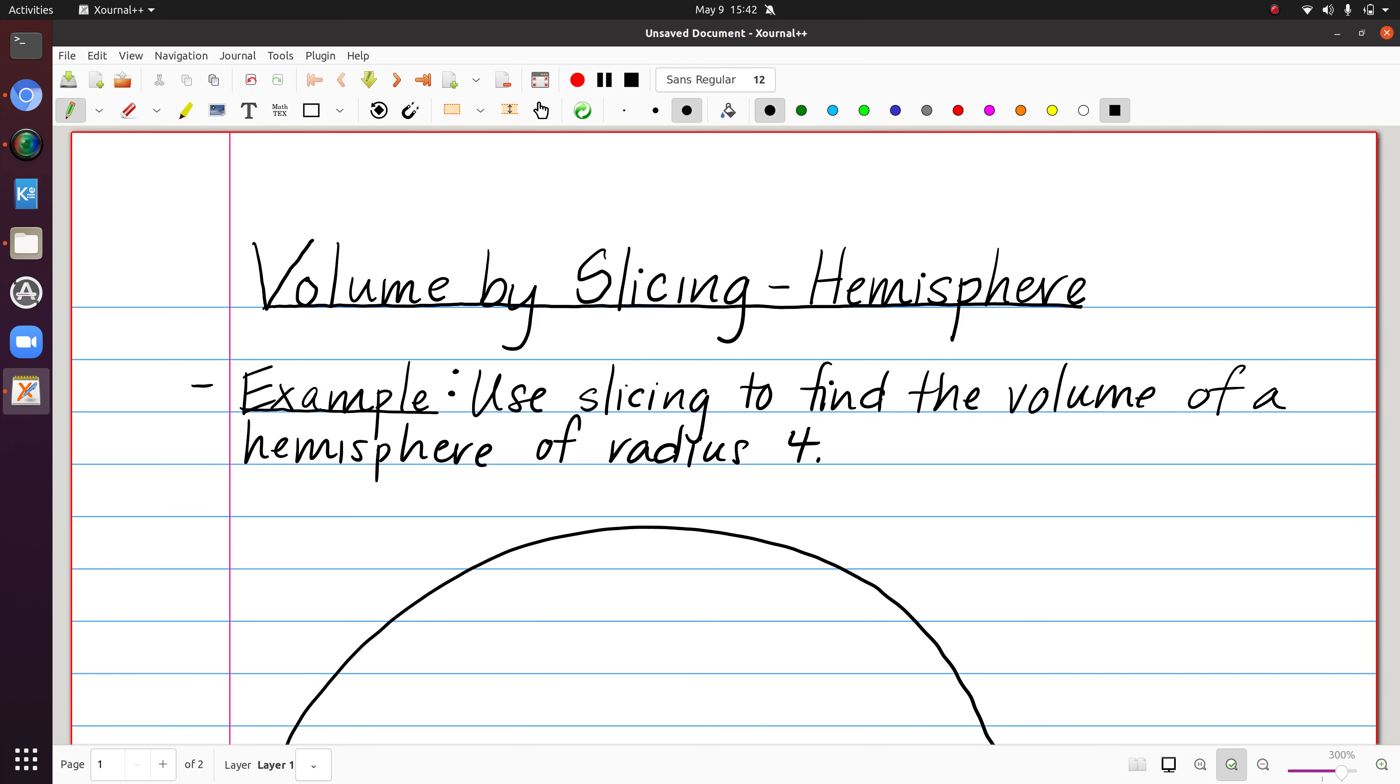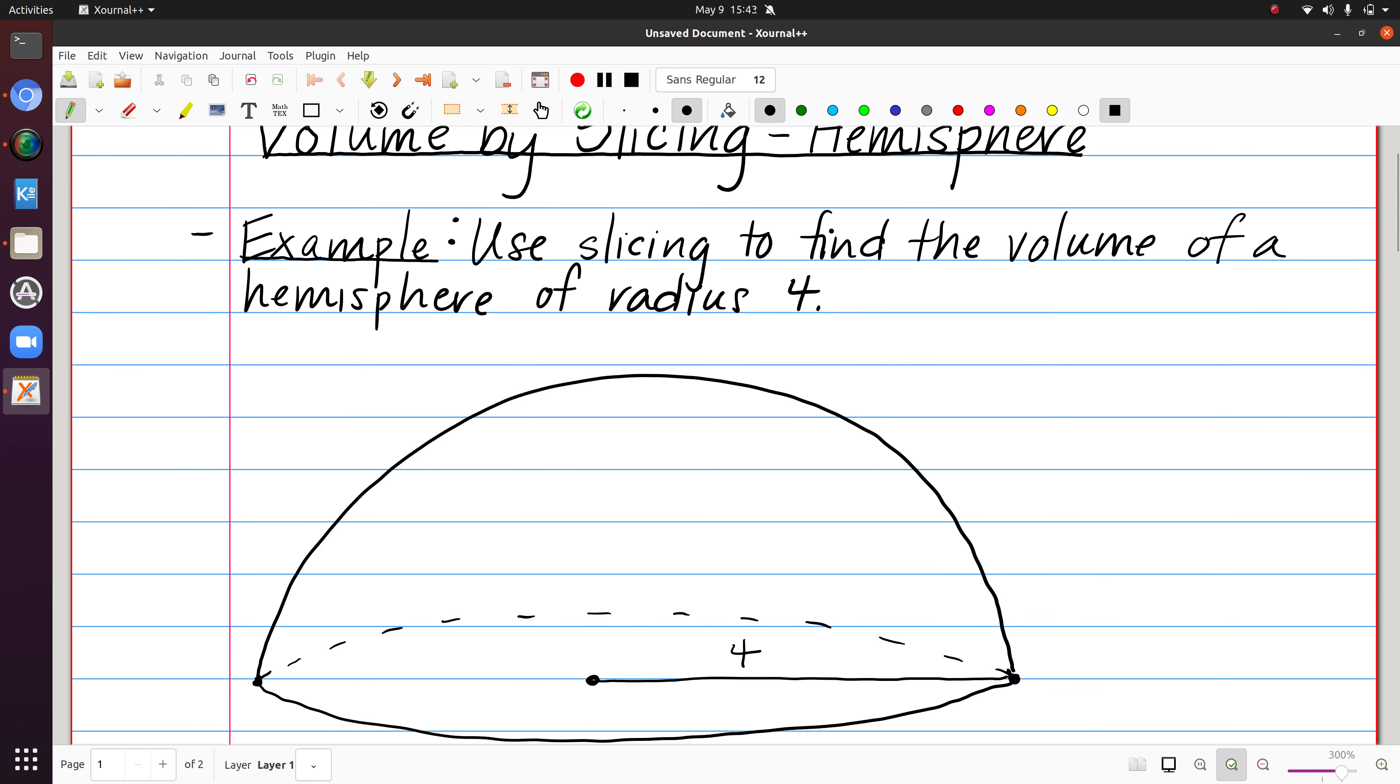Continuing with our discussion of using slicing to find volume, we've seen the method of doing this to find the volume of a cylinder. Let's now look at using the same technique to find the volume of a hemisphere of radius 4.